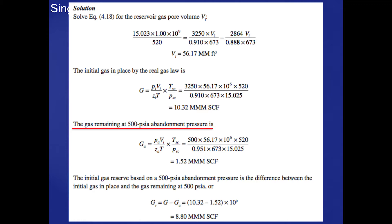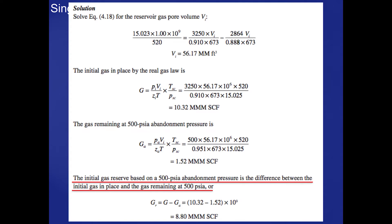The gas remaining at the abandonment pressure of 500 PSIA is given by this equation. The initial gas reserve is the difference between the initial gas in place minus the gas that was in the reservoir at the time of abandonment. That will equal the gas reserve, or what we could expect to be produced down to that pressure, as shown on this slide.